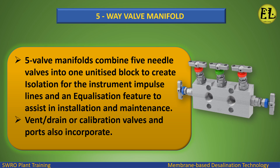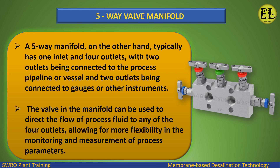Five-way valve manifold: five-valve manifolds combine five needle valves into one manifold block to create isolation for the instrument impulse lines and an equalization feature to assist in installation and maintenance. Vent, drain, or calibration valves and ports are also incorporated. A five-way manifold typically has one inlet and four outlets, with two outlets connected to the process pipeline or vessel and two outlets connected to gauges or other instruments. The valves in the manifold can be used to direct the flow of process fluid to any of the four outlets, allowing for more flexibility in monitoring and measurement of process parameters.